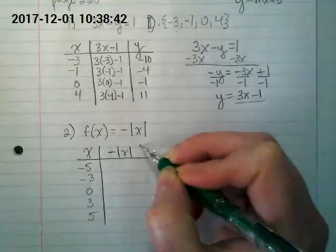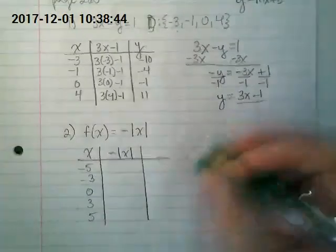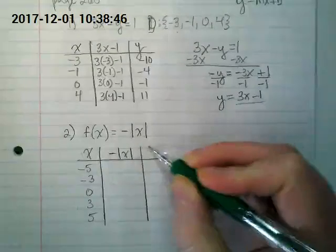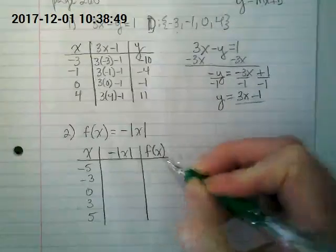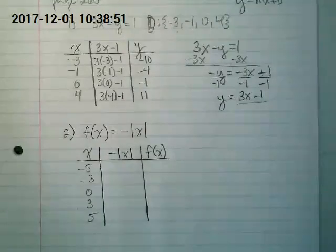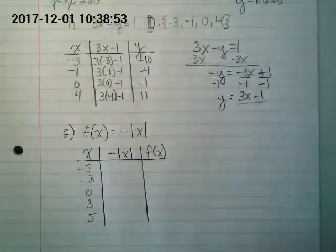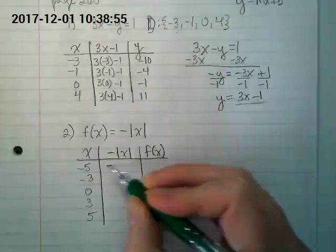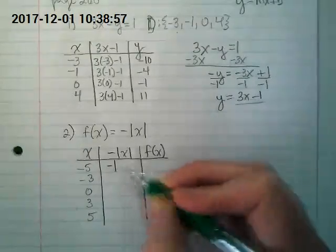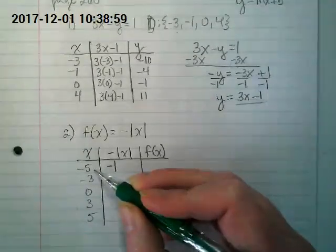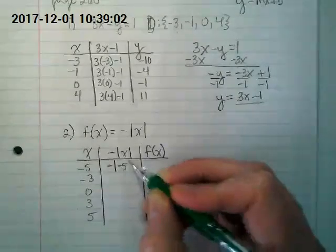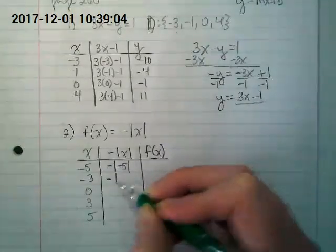I'm just going to take the domain and put it into an xy table. So the domain is negative 5, negative 3, 0, 3, and 5. This time they gave us 5 x's to input. Our rule is negative absolute value of x. And you can write y here or you can do the fancy version that's in our equation.